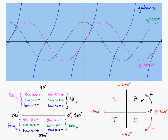So what we have is a simple diagram which tells us in which quadrants the functions are positive. This is called the quadrant rule. In the next section, I'll show you how we use this to help us solve trig equations very efficiently.